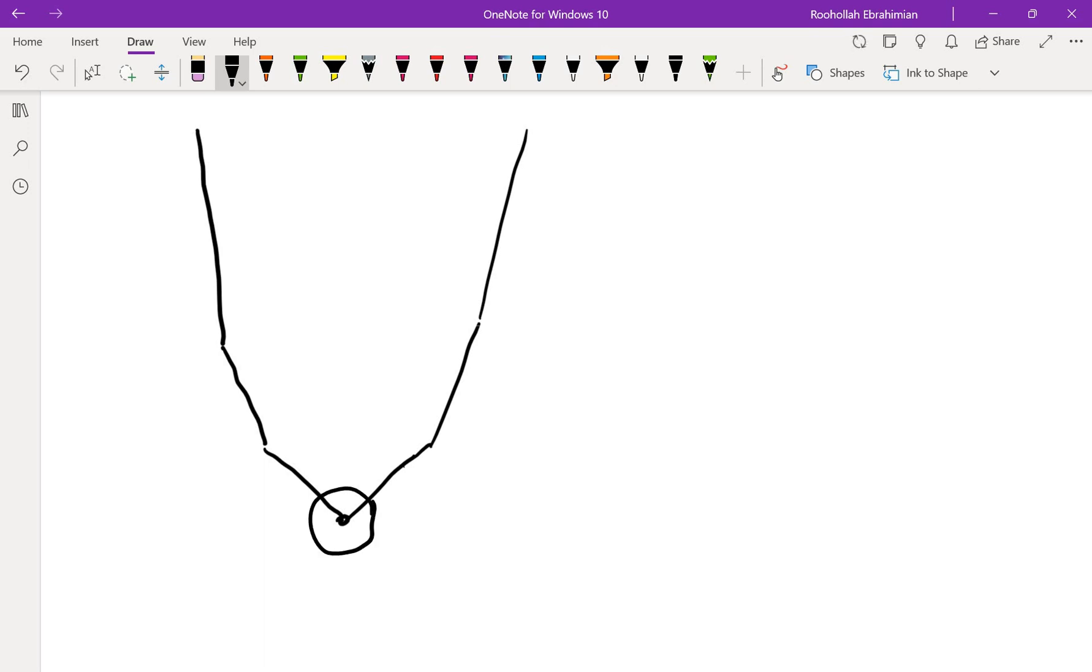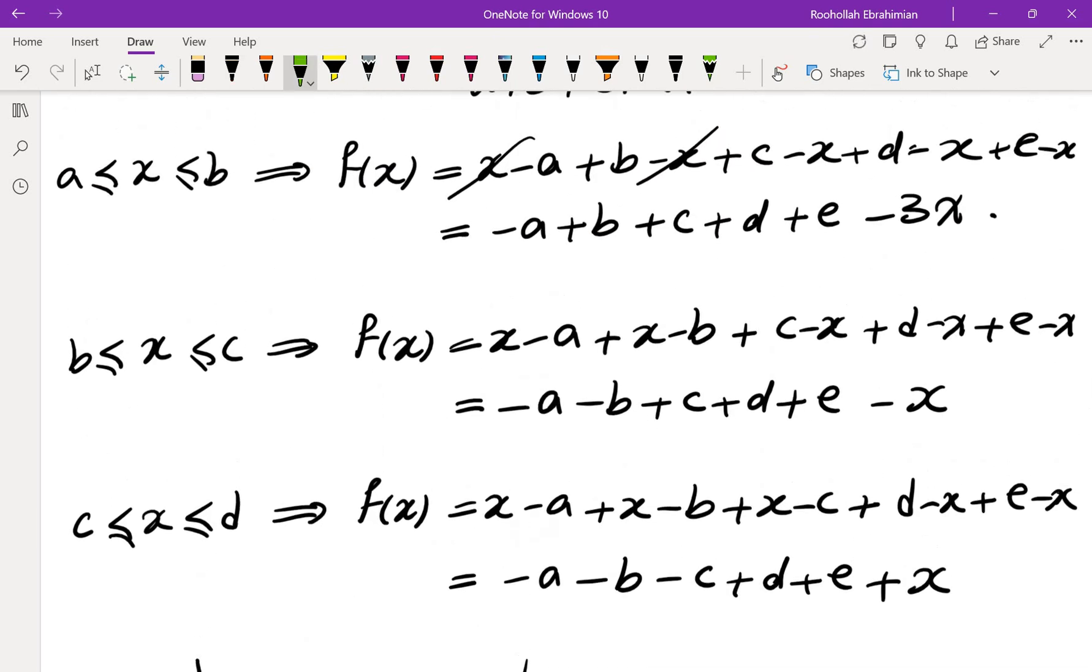which means the minimum is right when it changes the slope from negative 1 to positive 1. And that is exactly when x is equal to C. So we'll have to plug in x equals C, and when we plug in x equals C,